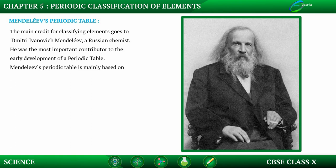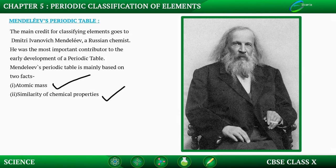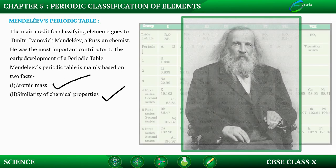Mendeleev's periodic table is mainly based on two facts: atomic mass and the similarities of chemical properties. When Mendeleev started his work, only 63 elements were known. He examined the relationship between the atomic mass of the elements and their physical and chemical properties, finding all the similarities and making a table accordingly.